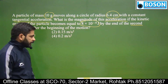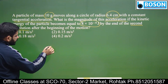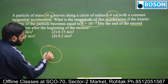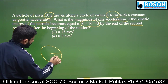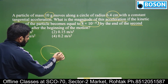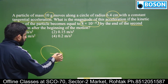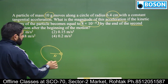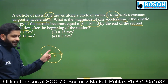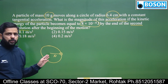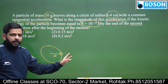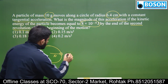सवाल क्या बोल रहा है? सवाल में कहा गया है कि एक circular motion हो रहा है, let's say radius r है, और इस circular motion का जो tangential acceleration है वो constant है। ऐसे केस में आप इस circular motion को equivalent linear motion में convert कर सकते हैं।